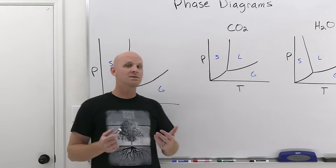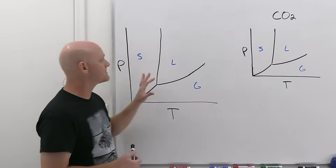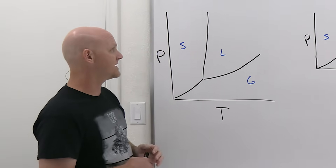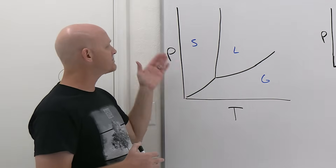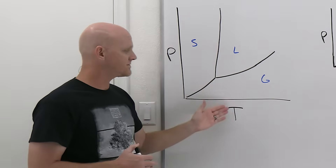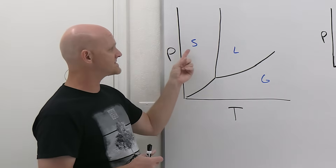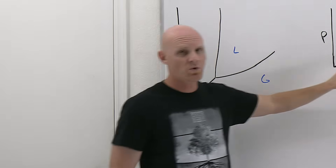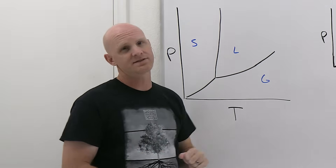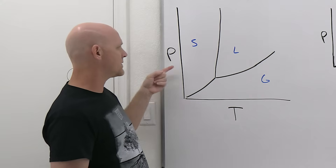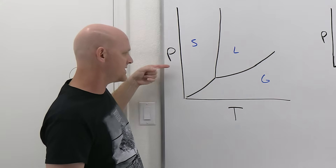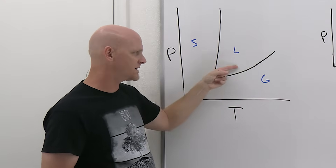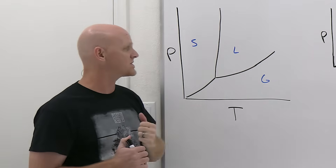We're going to start with a very typical compound — a phase diagram for what a typical compound looks like. A phase diagram is a plot of pressure versus temperature where we see the three different phases: solid, liquid, and gas. As you increase temperature going left to right, you go from solid to liquid to gaseous phase.